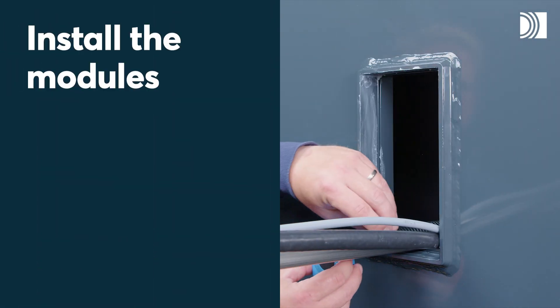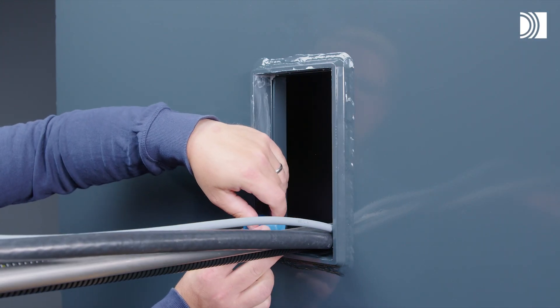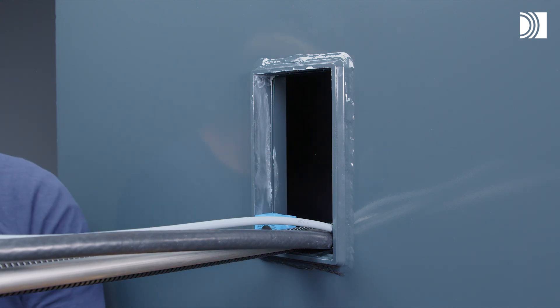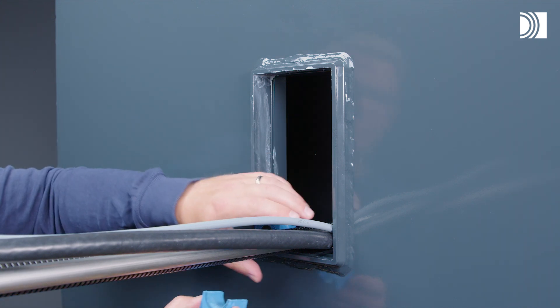Install the modules. Insert the modules according to your packing plan. Start with the largest modules and place any spare modules close to the wedge.